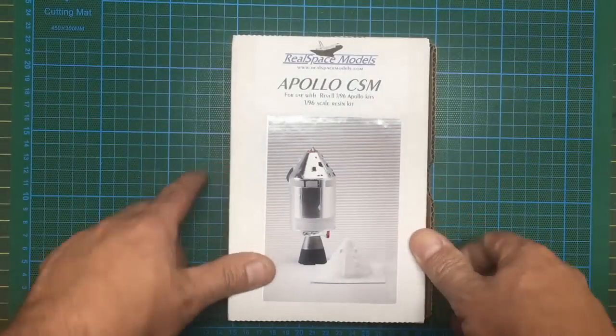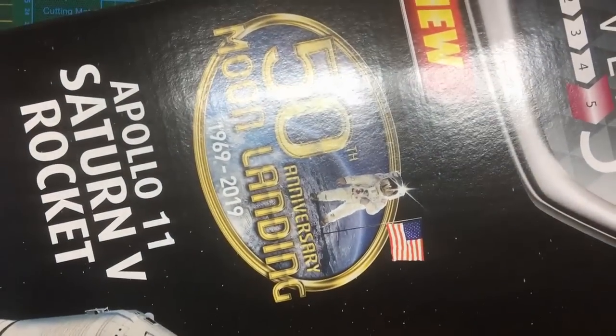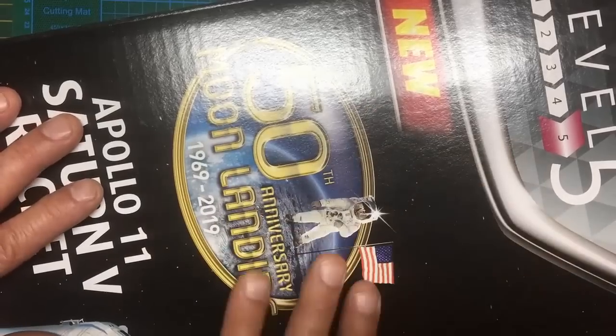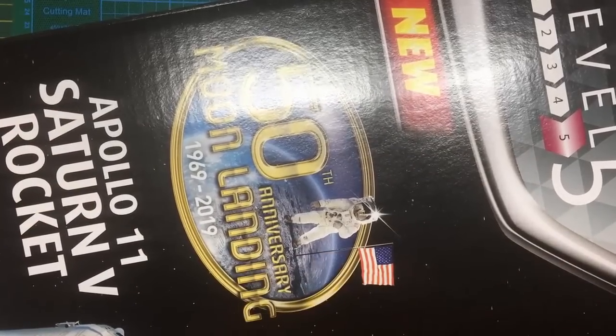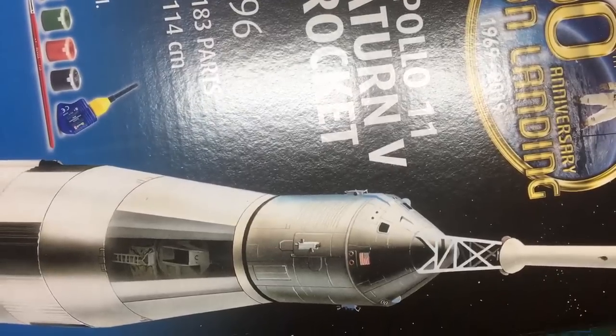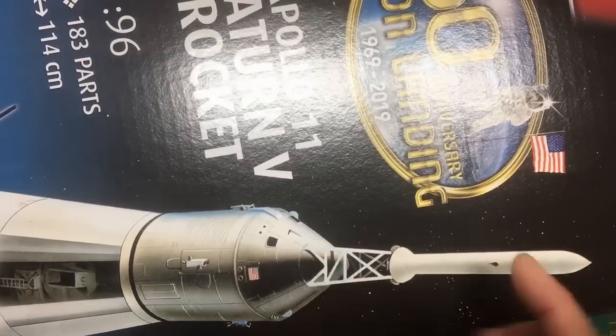Why do we want this set? Why would you want to buy this for your 1/96 scale Revell kit? Let me just show you. This is the boxing for the 50th anniversary kit. I've done a review of this if you want to look back. Here we've got the LES launch escape system, and this is a picture of the actual model itself I believe.